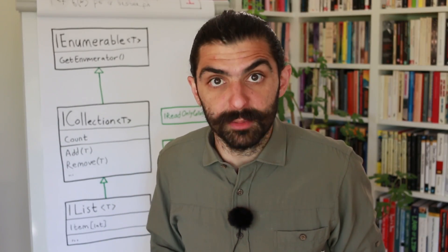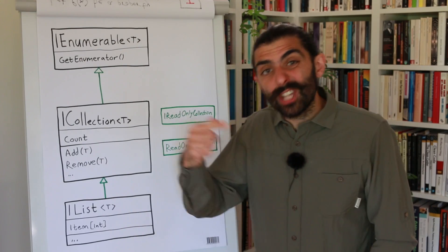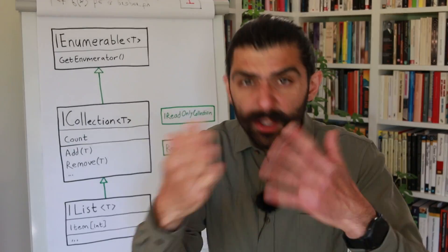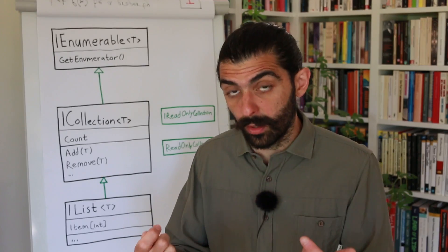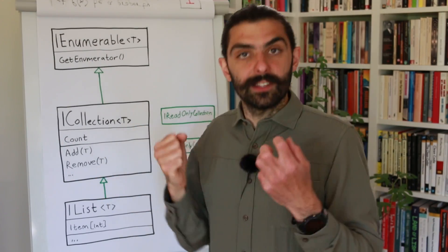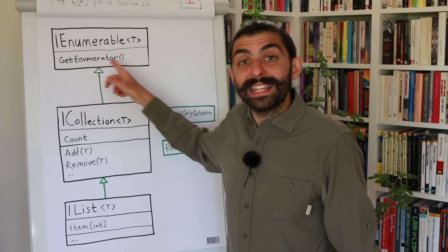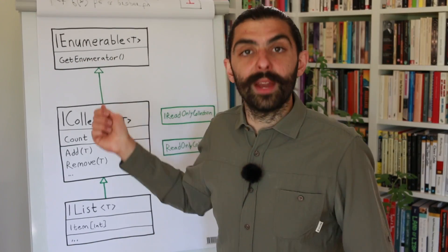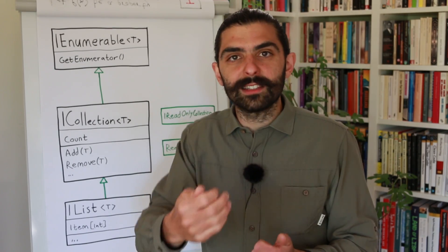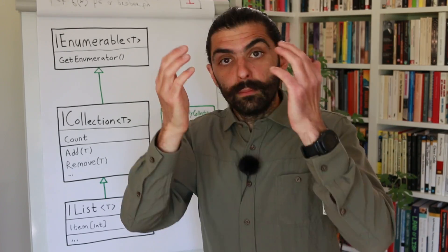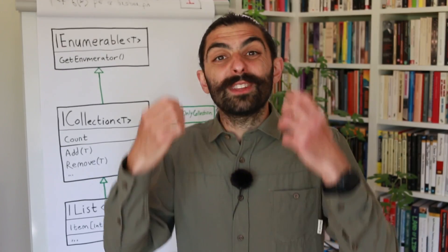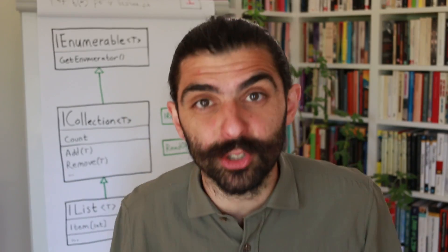Let me show you why this makes sense in terms of the Liskov Substitution Principle. If you have an enumerable, you can access each element one at a time, but you don't know how many items are in it because it's potentially infinite. All you can do is ask whether there are more items, move to the next item, and get the current item. The method GetEnumerator returns an IEnumerator object, which exposes HasMoreElements, MoveNext, and Current. So IEnumerable and IEnumerator are essentially an implementation of the iterator design pattern.